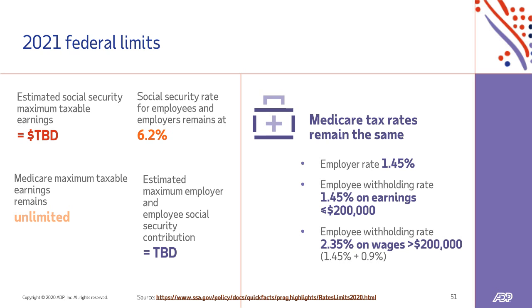Regarding federal limits for 2021 for Social Security and Medicare taxes: SSA has not yet made that formal announcement this year. We don't expect any rate changes to Social Security or Medicare rates, but we still don't have the formal announcement from SSA or the new wage thresholds. A link at the bottom of the slide will take you to the SSA website where that information will be available once announced. And now it's time for our last polling question of the session.